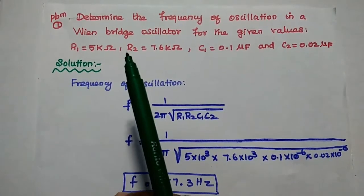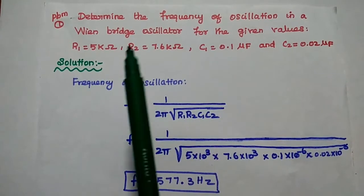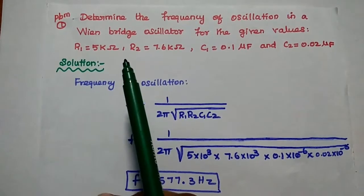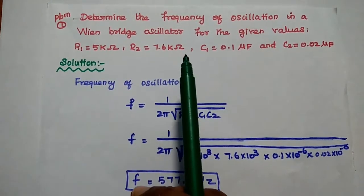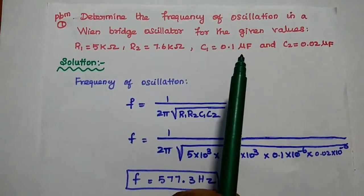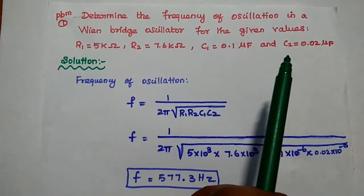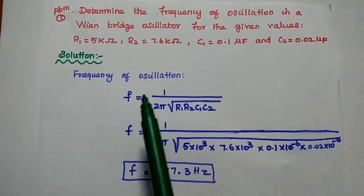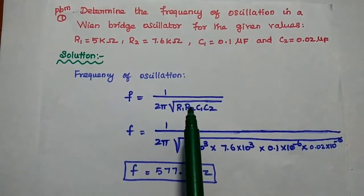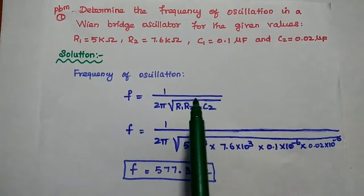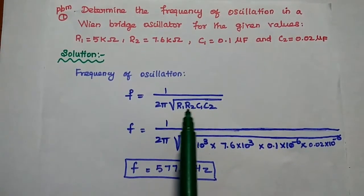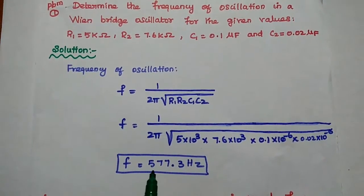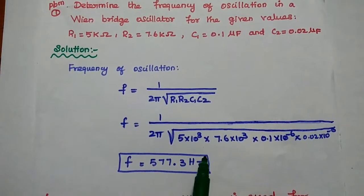The first problem: determine the frequency of oscillation in a Wien Bridge oscillator for the given values R1 equals 5 kilo ohm, R2 equals 7.6 kilo ohm, C1 equals 0.1 microfarad, and C2 equals 0.02 microfarad. We use the formula f equals 1 by 2 pi square root of R1 R2 C1 C2, substitute the values, and get f equals 577.3 hertz.